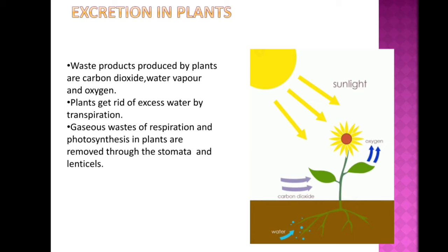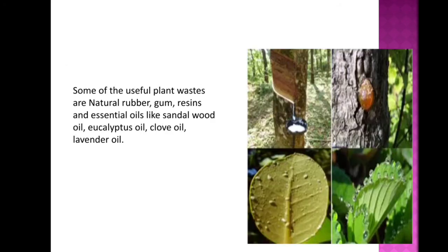These gases are released into the air. Besides gaseous waste, plants also produce some useful waste products. Many plant waste products are stored in cellular vacuoles, and some waste products may be stored in leaves that fall off. Other waste products are stored as resins and gums.